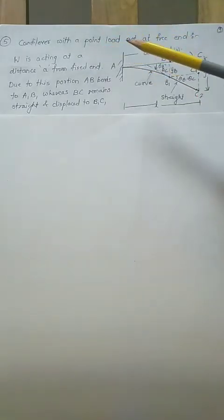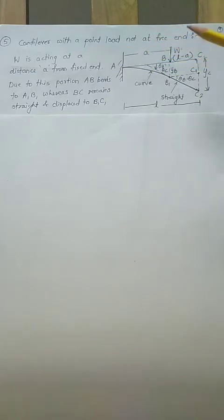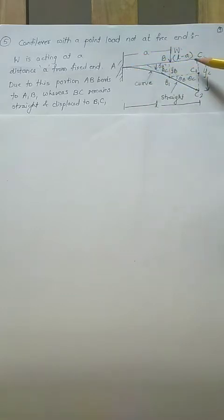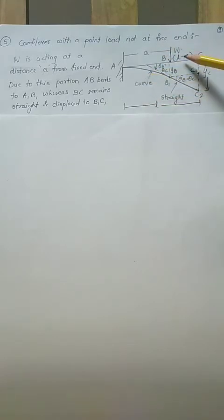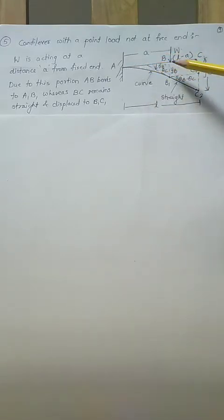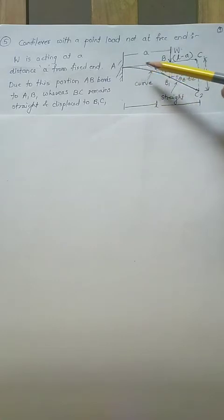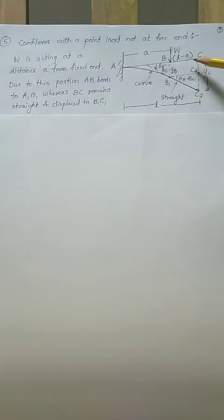The next derivation we will see is a cantilever with a point load not at the free end. Here W load is acting on a cantilever beam with a fixed end at A and free end at C. W is acting at point B, which is at a distance 'a' from the fixed end, and the total length is L, so the remaining distance is L minus a. Under this loading condition, the part A to B will deflect and have curvature, while part B to C will remain straight because no load is acting on it.